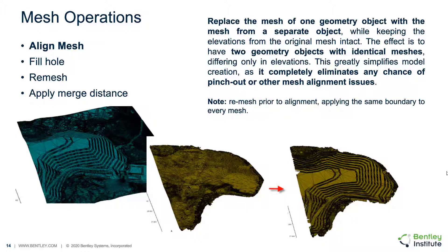Having aligned mesh nodes also improves the potential calculation of vertical flow in a groundwater package. The function ultimately replaces the mesh from one geometry object to utilize the mesh from a separate object, but the elevations from the original mesh remain intact. This functionality is often used to eliminate pinch-outs or other alignment issues, since the node pattern in the plan view matches for every surface, making it easy to determine if surfaces overlap using the overlap function.